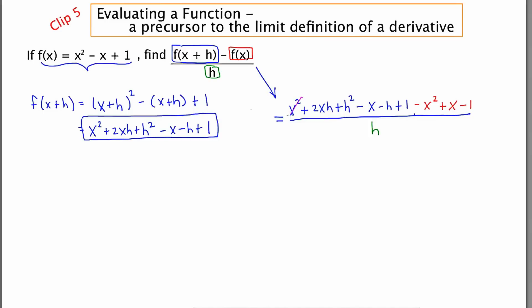For example, we have an x squared here and a negative x squared there. We have a minus x and a plus x and we have a plus 1 and a minus 1. So when all is said and done, we have 2xh plus h squared minus h all over h.